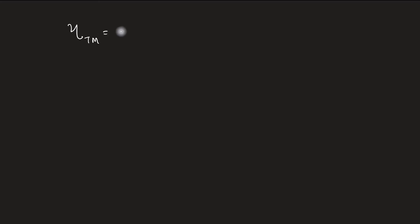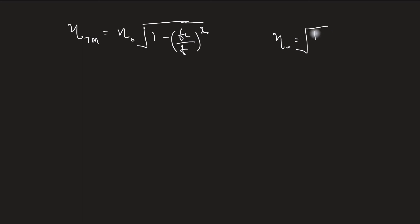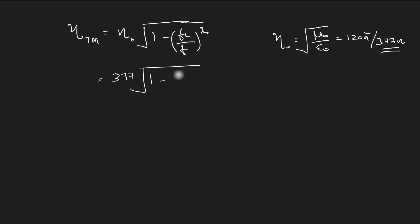The intrinsic impedance expression: eta_TM is equal to eta0 times root of 1 minus (fc/f)². It is the intrinsic impedance of TM mode, where eta0 is root(mu0/epsilon0), which equals 377 ohms. Substituting the value: 377 into root of 1 minus (57.1 GHz / 50 GHz)² all squared. The intrinsic impedance is a real value; the direct answer is 114 ohm.